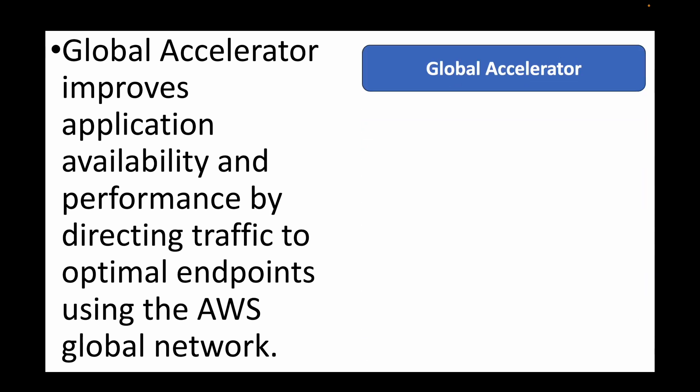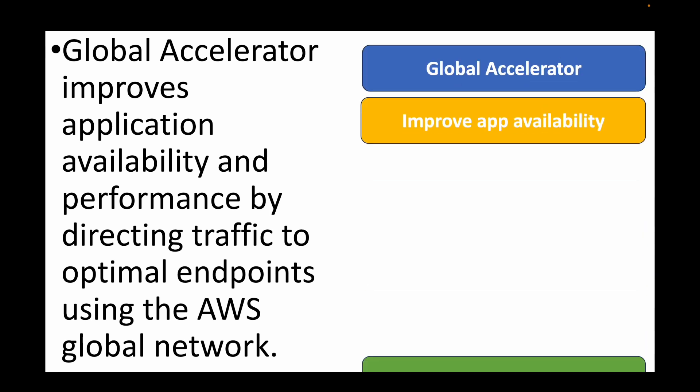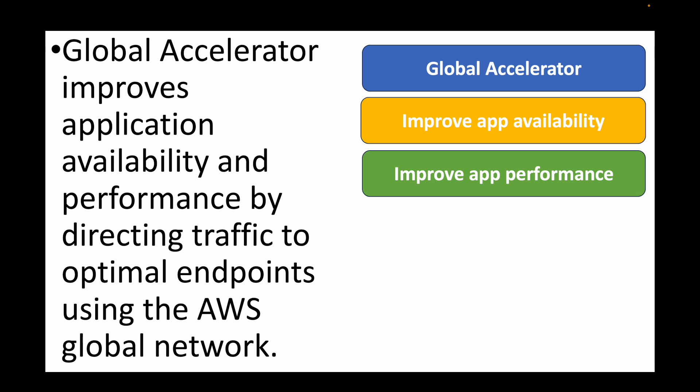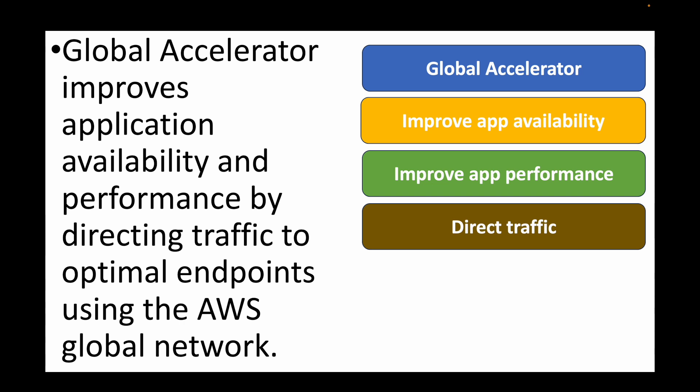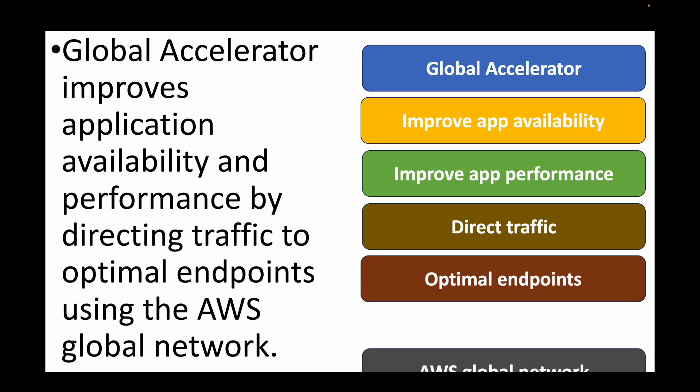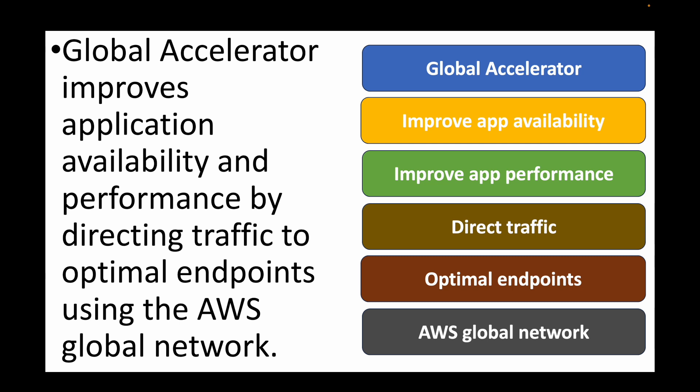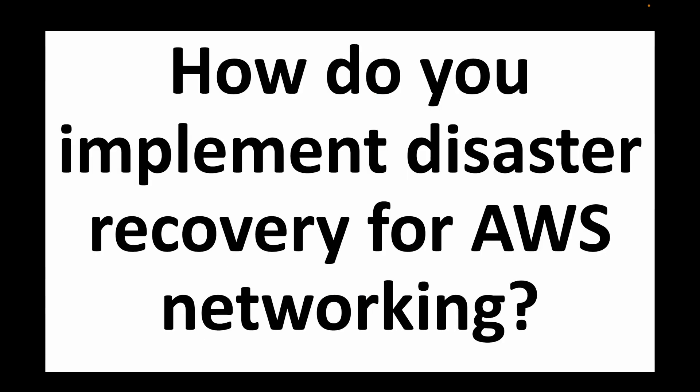The next question is: what is AWS Global Accelerator? This service helps improve application performance and availability by routing user traffic through the AWS global network rather than the public internet. This ensures low latency and high reliability. Traffic is routed through optimal endpoints within the AWS network, so it never leaves the AWS network, resulting in high availability and better performance for your applications.